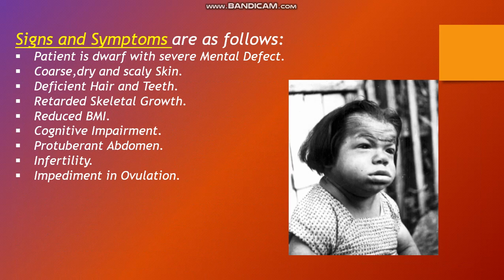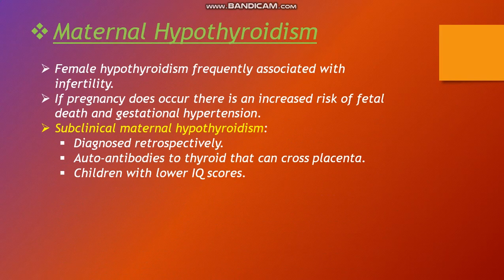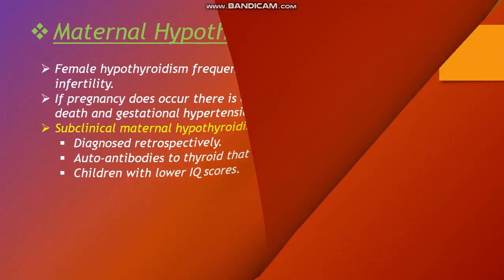Maternal hypothyroidism is frequently associated with infertility. In pregnancy, if pregnancy does occur, there is an increased risk of fetal death and gestational hypertension. Subclinical maternal hypothyroidism, diagnosed retrospectively via antibodies to the thyroid that can cross the placenta, is associated with children having low intelligence quotient scores.